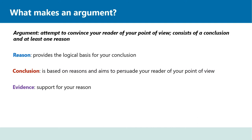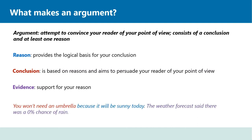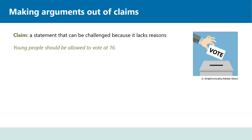Let's look at the following example: 'You won't need an umbrella because it will be sunny today. The weather forecast said that there was a 0% chance of rain.' As you can see, the order of the individual components of your argument doesn't matter. Here we start with the conclusion — you won't need an umbrella — and then go on to explain why. If you don't provide the reason and the evidence for your conclusion, then you don't have a whole argument; you will simply have a claim. A claim is a statement that can be challenged because it lacks reason. If you simply state that young people should be allowed to vote at 16, you are not presenting an argument but an opinion.